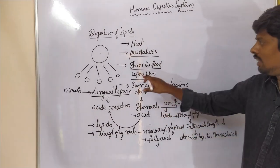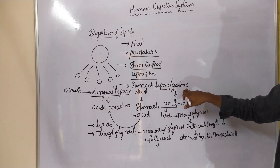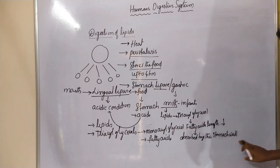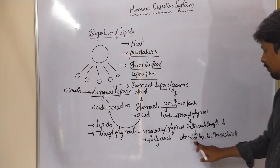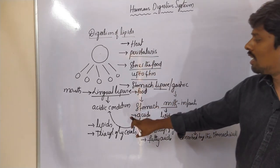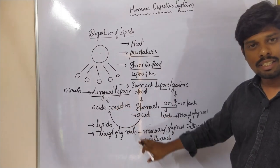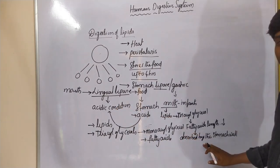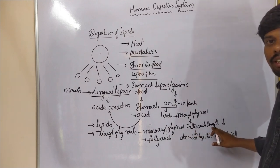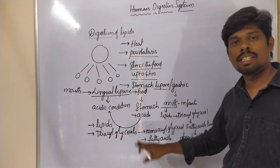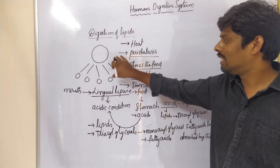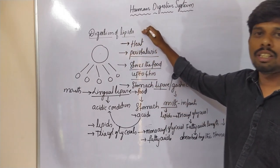In the stomach, gastric lipase acts on milk and produces small fatty acids, which are absorbed by the stomach wall. At the same time, lingual lipase acts on triacylglycerols, also producing fatty acids — both short-chain and long-chain fatty acids. In this way, the stomach digests the lipid moieties present in the food.